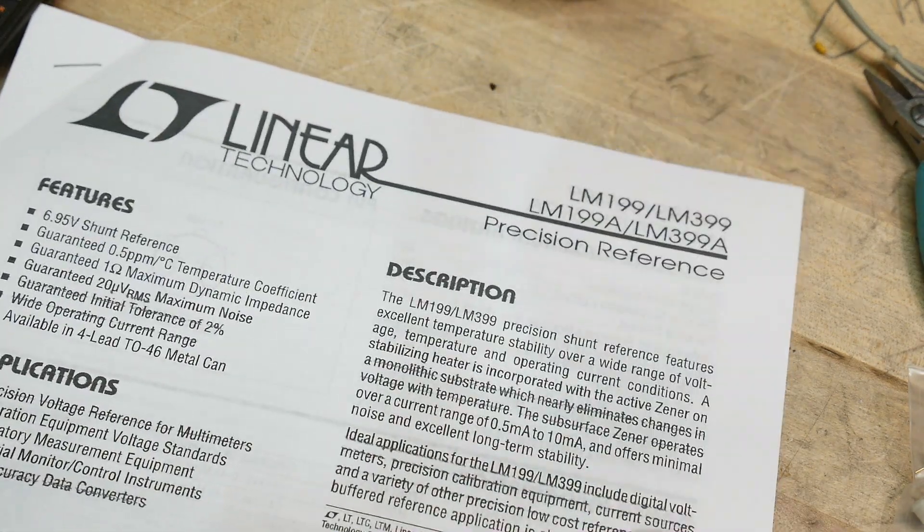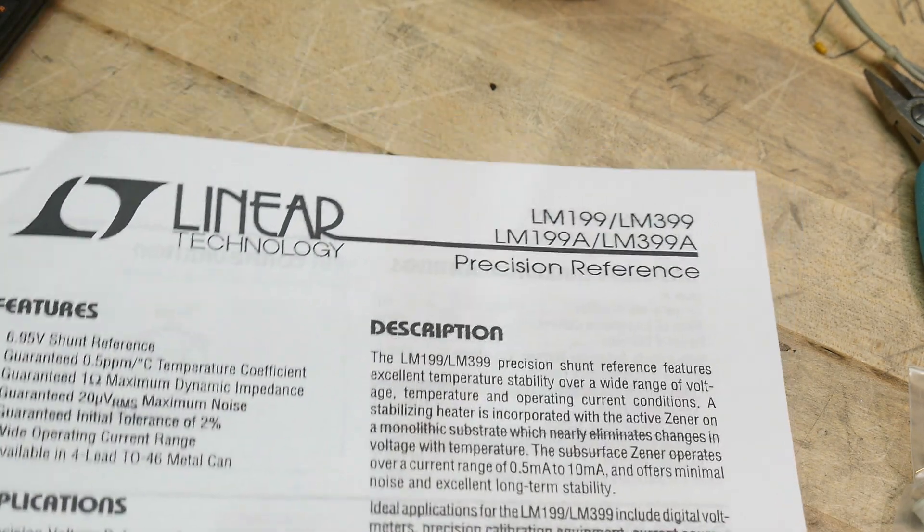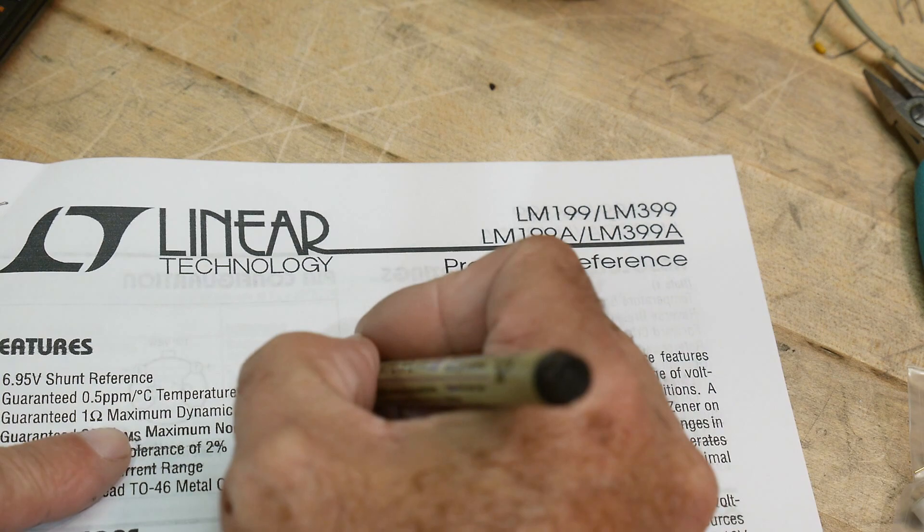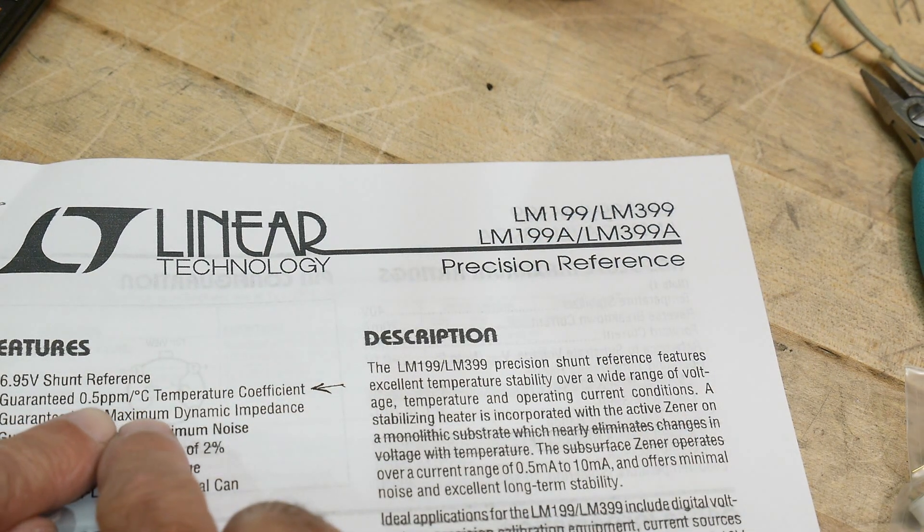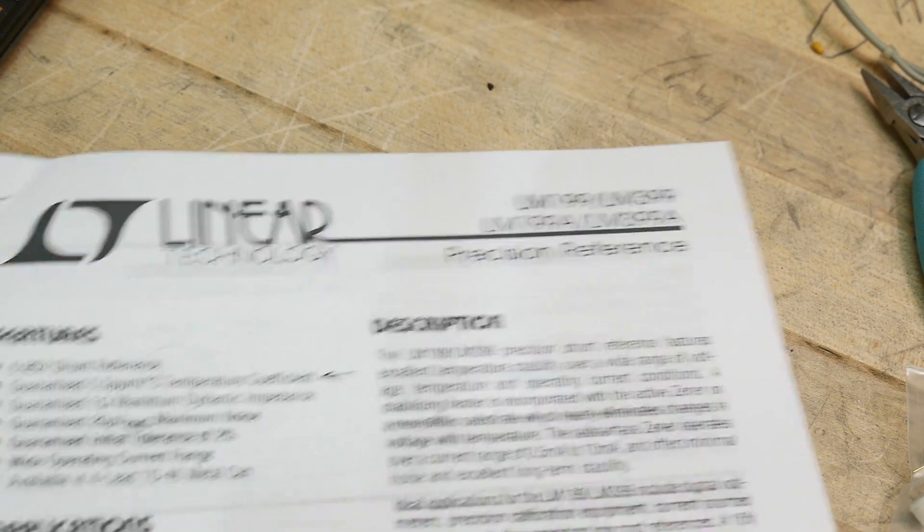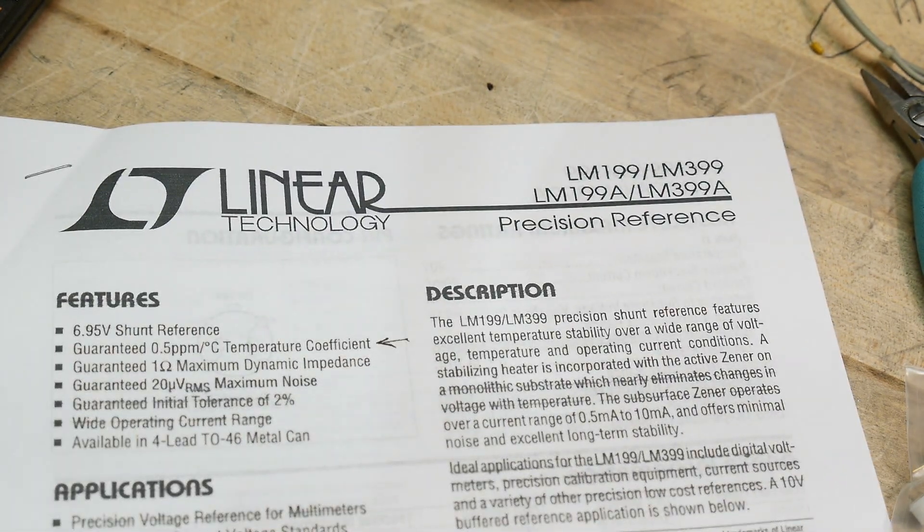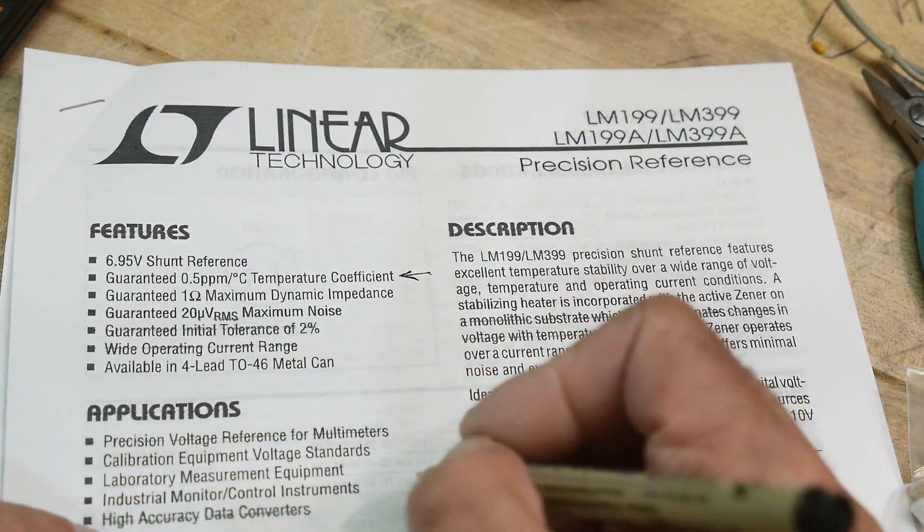Before we turn one on, I want to talk about the specification that you really care about. It's this one right here: guaranteed 0.5 ppm per degree C temperature coefficient. Let's talk about what that means. A lot of people don't understand ppm. PPM stands for parts per million.